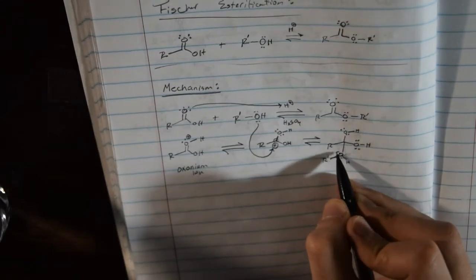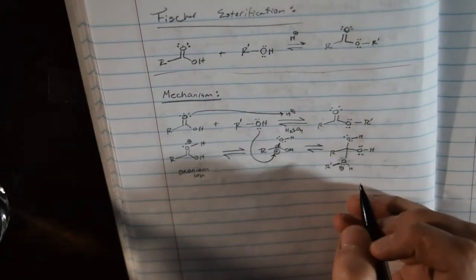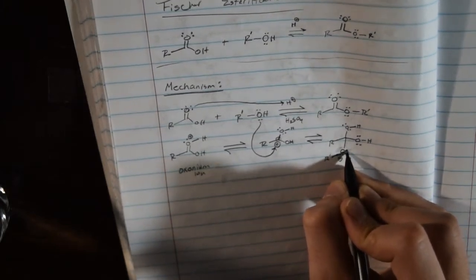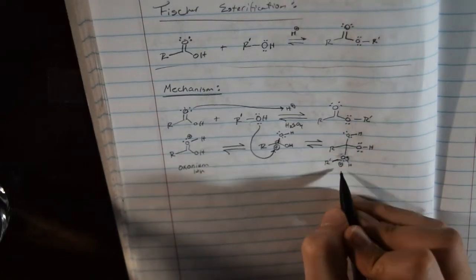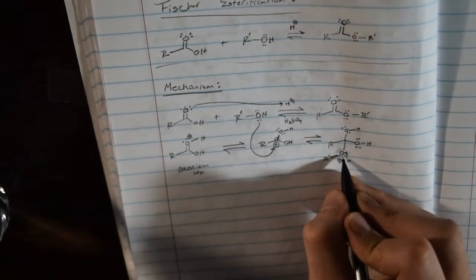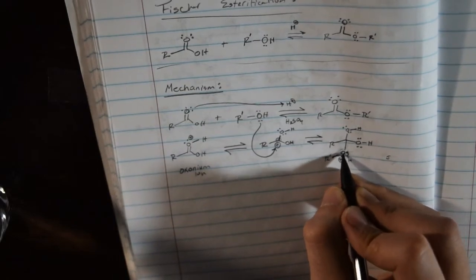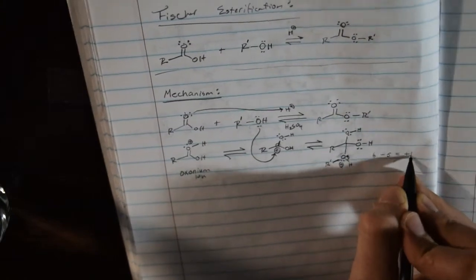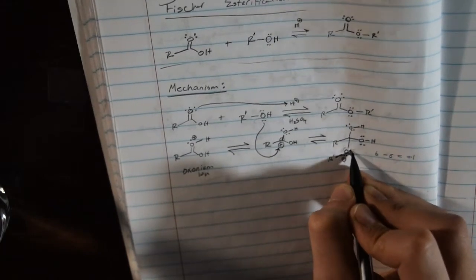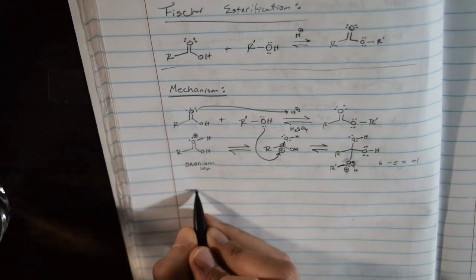After we form this structure, the electrons on the hydrogen bond are given to the oxygen here to remove the positive charge. If you remember how to do formal charge — look at the bonds and electrons: one, two, three, four, five; oxygen has six valence electrons; six minus five equals positive one. If we give the electrons of the hydrogen, we have six electrons used: six minus six equals zero. This gives us an uncharged structure.